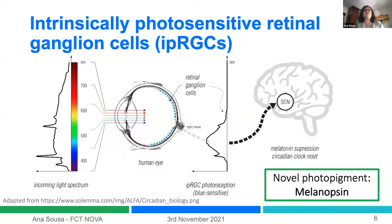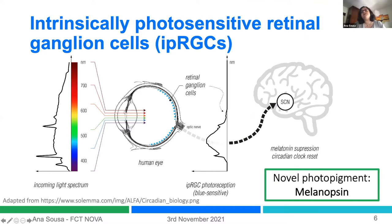This technique regained new interest over the last 20 years due to the discovery of a novel photopigment called melanopsin. Before this, scientists thought the only photoreceptors we had were cones and rods. But over 20 years ago, they found we also have cells called intrinsically photosensitive retinal ganglion cells (ipRGCs), part of the retina, which contain this new photopigment called melanopsin. A key particularity of this photopigment is its sensitivity to blue light.